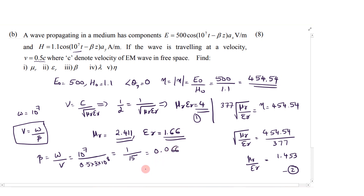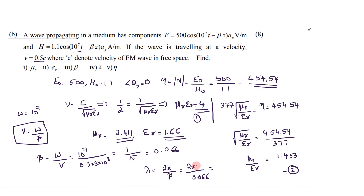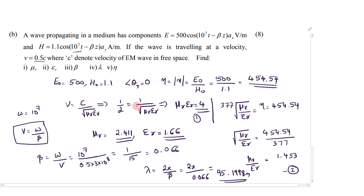Lambda equals 2 pi divided by beta. So lambda equals 2 pi divided by 0.066, giving a lambda value of 95.1998 meters. So we have got all the values. Learn all these main equations as well.